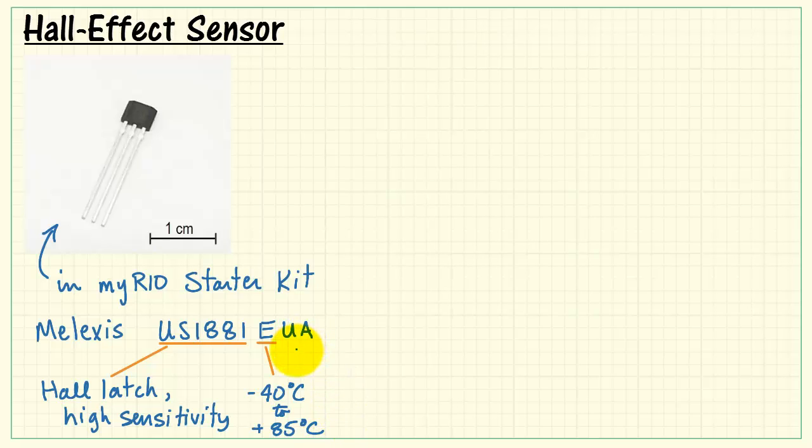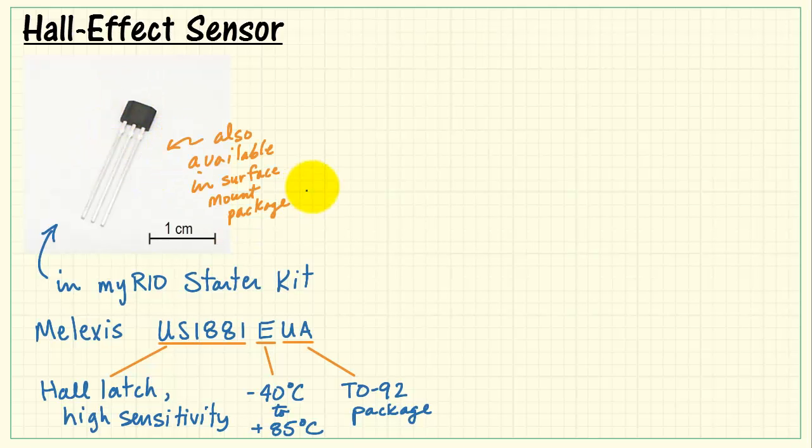Here we have the temperature range. And here we have the package type, TO92, which is pictured here. This is also available in a surface mount package, giving you a lower profile.